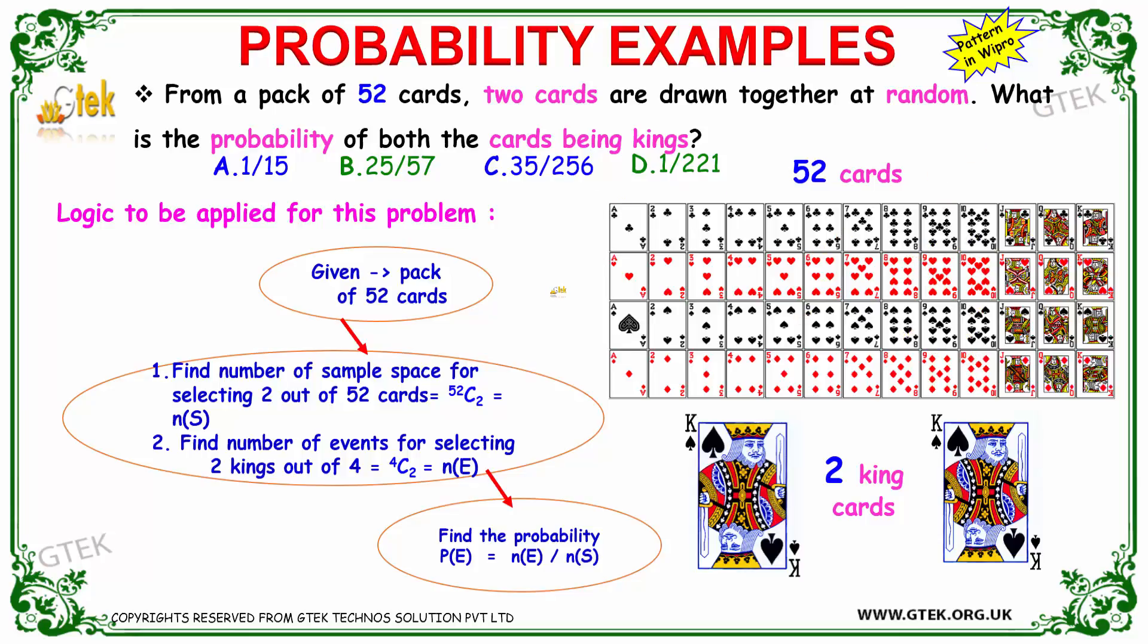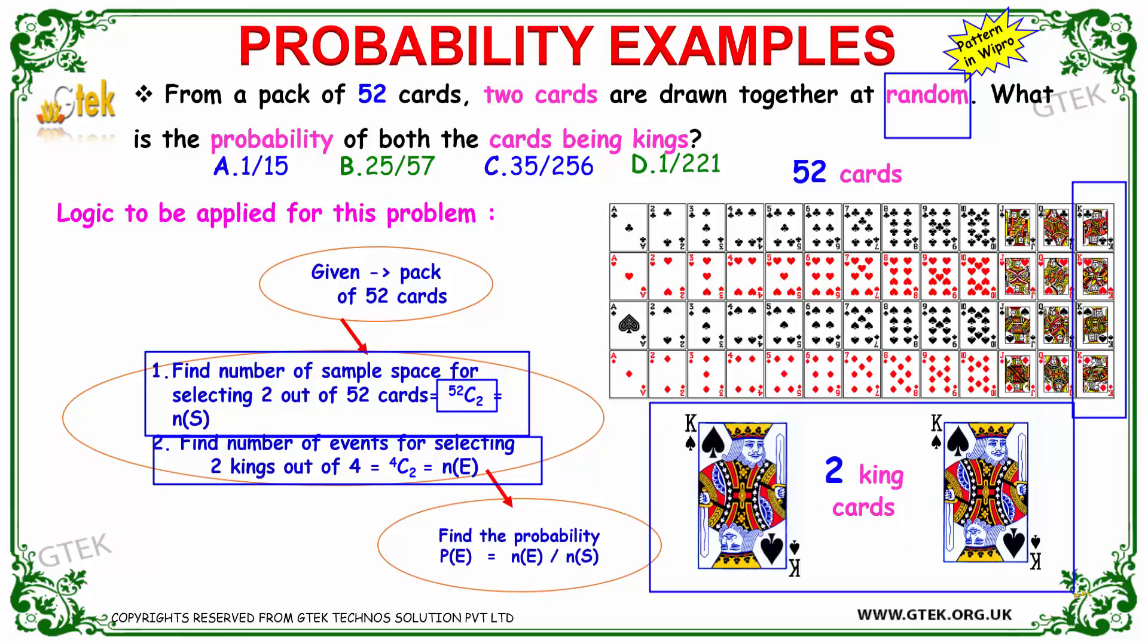The number of sample space is two cards you are selecting, so we need to find the number of sample space 52C2. We need to make it all, because the keyword 'random' is there. You have to use this combination C. This is the formula. And now you need to find the number of events for selecting it. We got four kings here. Among four kings, I want only two kings, so 4C2 is the combination. And afterwards, you need to find the probability.